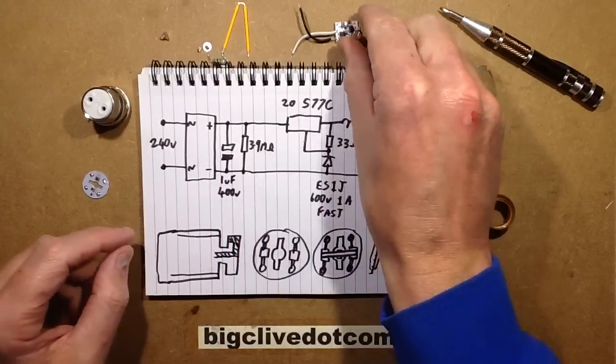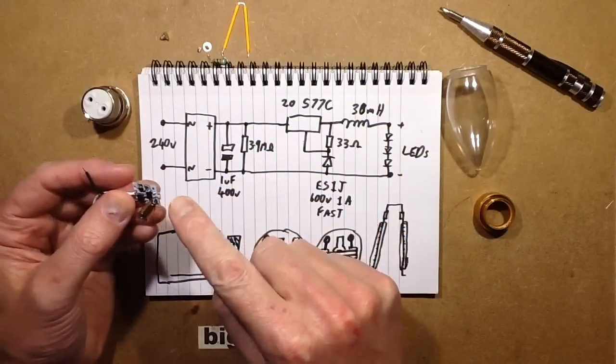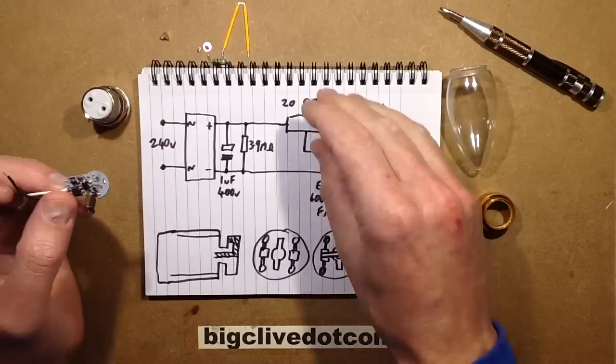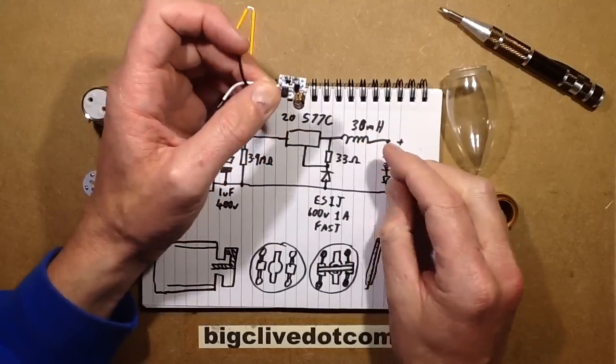So it's got the bridge rectifier. It's got a 1 microfarad 400 volt capacitor. It's got a 3.9 megaohm discharge resistor across that which is quite a high value, very unusually high value. It's got the inductor which is 30 millihenries, not microhenries, millihenries. And that's in series of the LEDs.